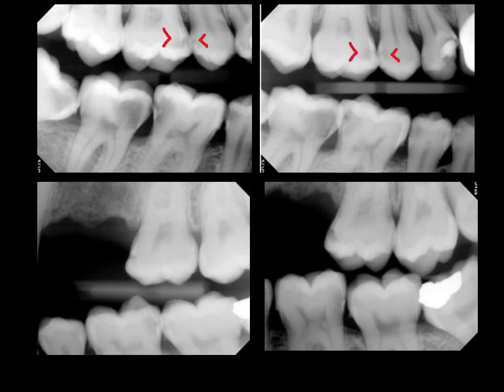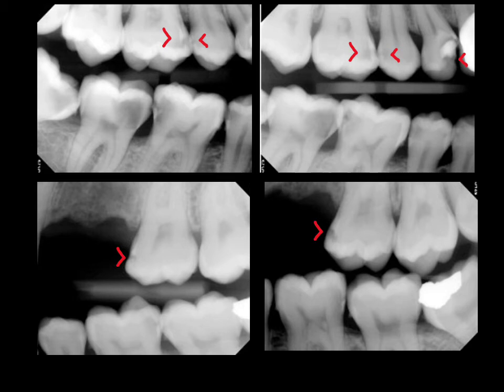There is obvious severe decay on the mesial of number five. Continuing over the maxilla, we can see decay on the mesial of number 14. The distal of number 14 is overlapped on that film, but we see it well in the next film, confirming that decay on the mesial of 14 is indeed true. Since number 13 is missing, we'll be able to look directly and with clinical vision and our explorer tell if that's truly decay.